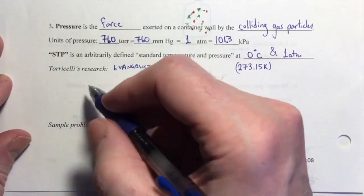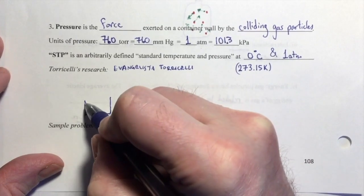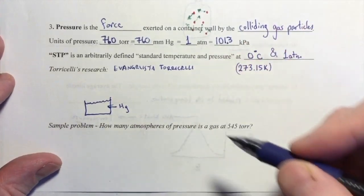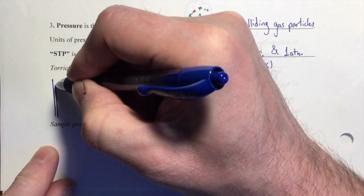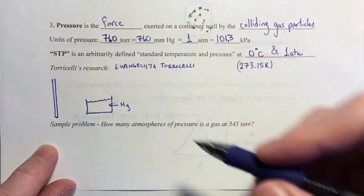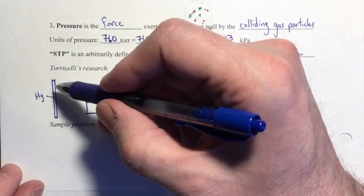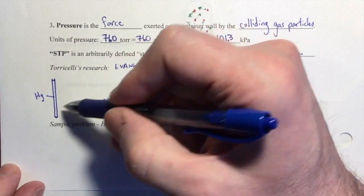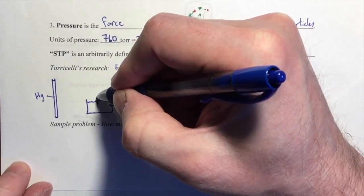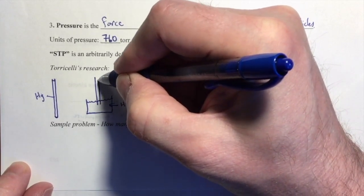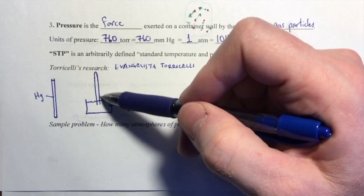Torricelli came up with an interesting experiment. He took a bowl and he filled it almost full with mercury. Then he took a long tube, a long glass tube that was closed on one end, and he filled that with mercury. Mercury is a metal but at room temperature and pressure, it is a liquid, right?